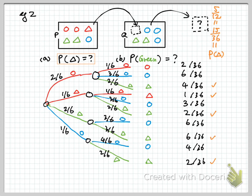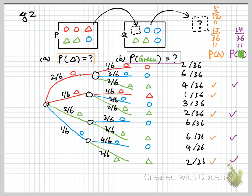Likewise, you can do that for part B. Once you have the tree diagram with the complete situation, for part B — the probability of having the green item, whatever it is — you pick up the green cases. So we have 4 plus 2 plus 6 plus 2, which goes to 14 out of 36. Dividing by 2, that is 7 out of 18.